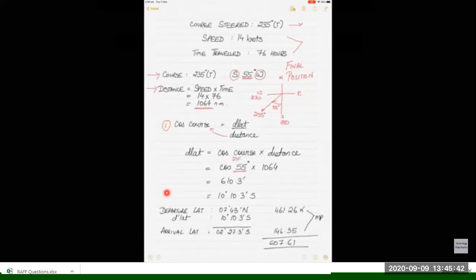Then we have to calculate the difference in meridional parts for calculating the longitude. Difference in meridional parts: we calculate the meridional parts for both the latitudes, 7°43' and 10°10.3', and that is d lat. So we get the final latitude as 02°27.3'S.